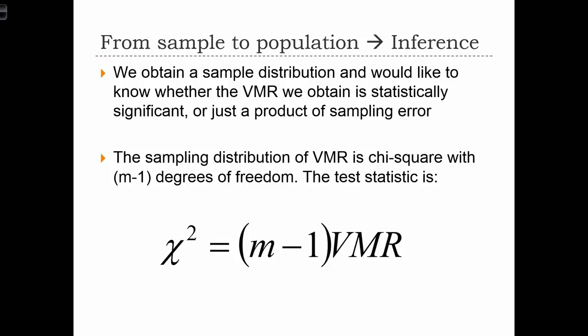How different to 1 does a VMR have to be in order to say with confidence that the data, that the population, that the population point pattern is not random? So when we're doing statistical inference, we're going to use a sample of points to determine whether or not the population that that sample came from is randomly distributed or not. In order to do this, we can use a chi-square test. We construct the test by just multiplying the VMR, the variance-to-mean ratio, by M minus 1.